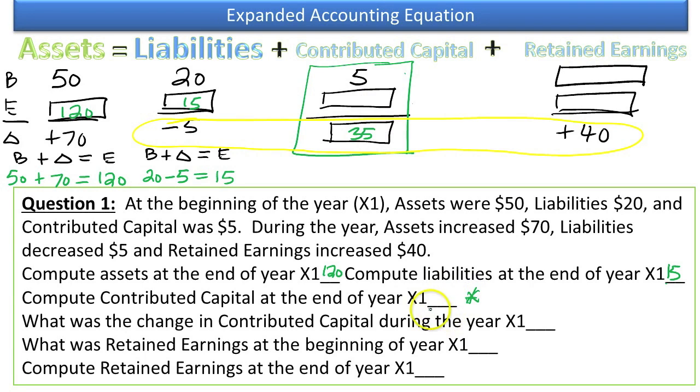But we're still trying to get this answer. We can't solve that yet without knowing the change. Now that we have the change, we can then work our way through. Take our beginning plus our change equals our ending. Beginning is 5. The change is 35 equals 40 ending contributed capital. Now we have the information to fill in. Compute contributed capital at the end of the year, X1. That is 40. The change was up 35.